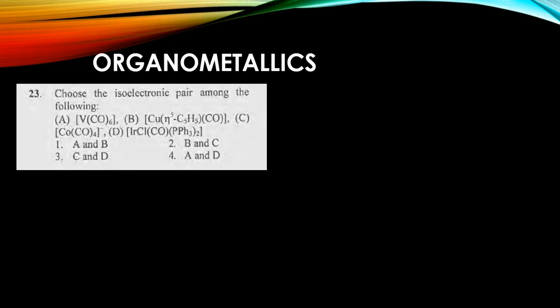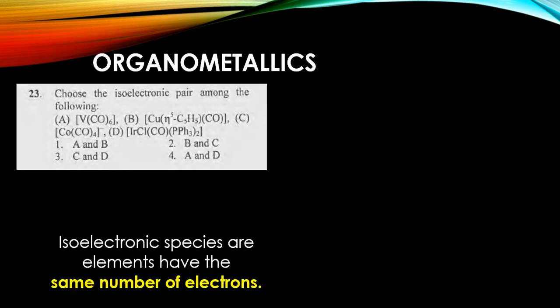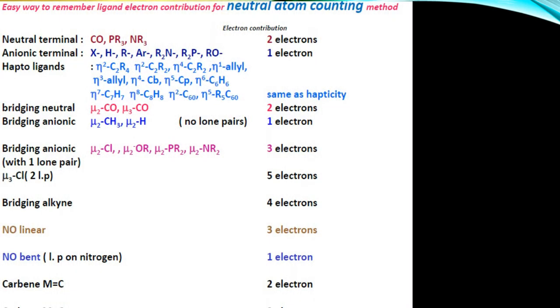This is a question regarding organometallics where isoelectronic pairs are asked. Isoelectronic species are species having the same number of electrons. For that, we first have to know about electron counting. There are mainly two types of electron counting methods.